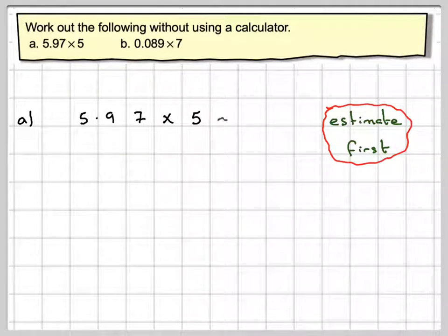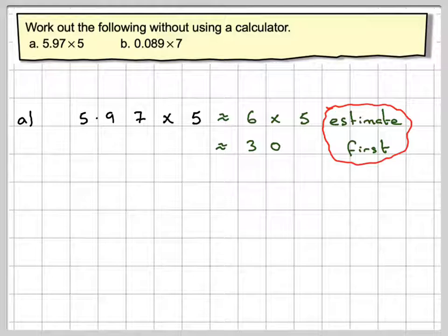that's pretty close to 6. So we can work out approximately, and this is what this symbol means, approximately equal to, if we make that number here a 6, and we'll work out 6 times 5 and we know the answer is 30. So we can say that this is approximately equal to 30.